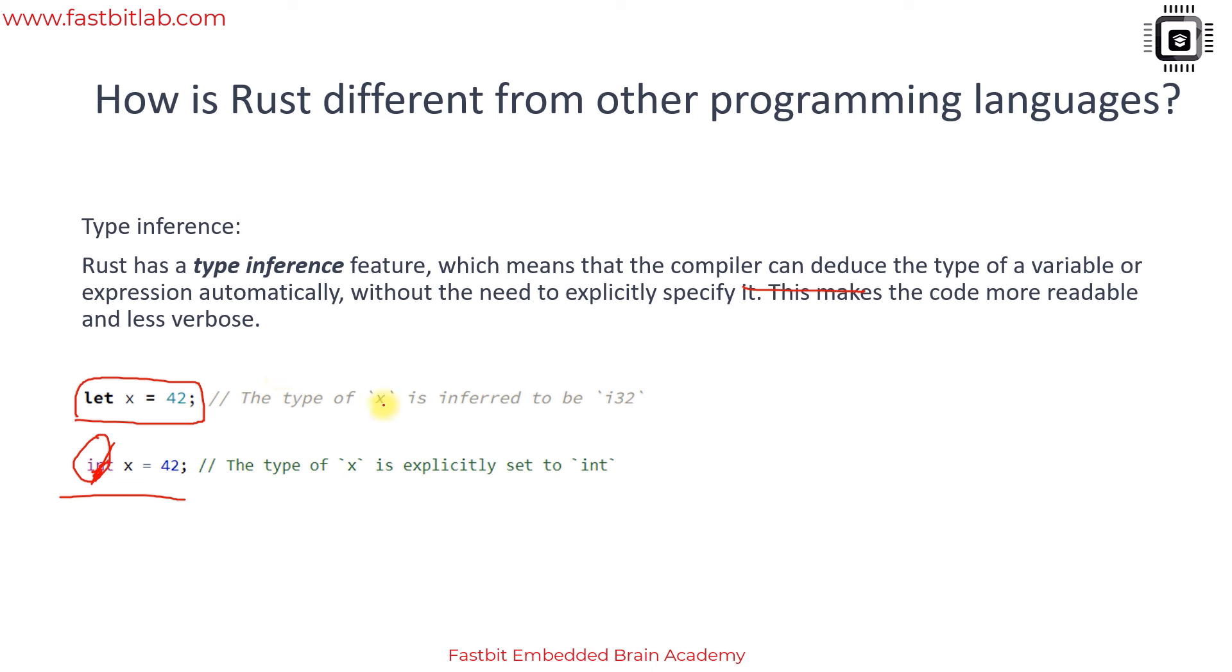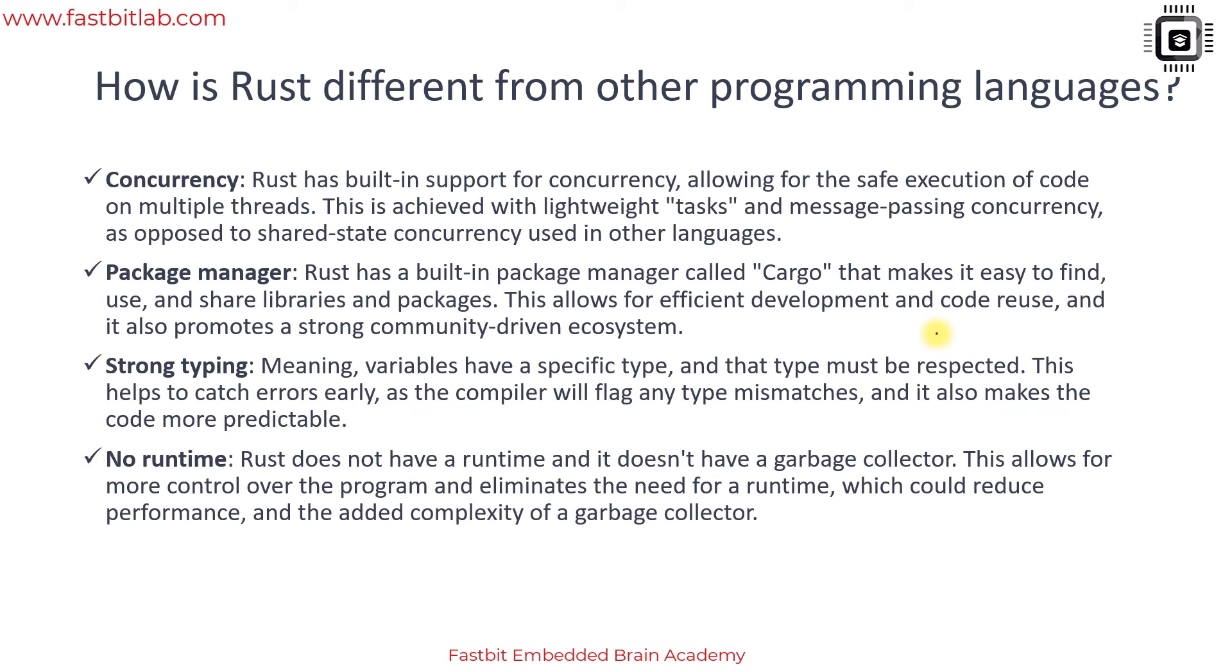But in the case of Rust you can do this because the type inference feature of the compiler will consider the type of x as integer 32 bits, that is called i32. We'll discuss various data types like primitive data types and some complex data types as we make progress in this course.